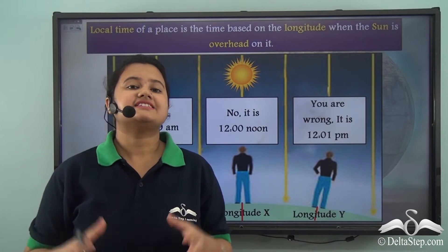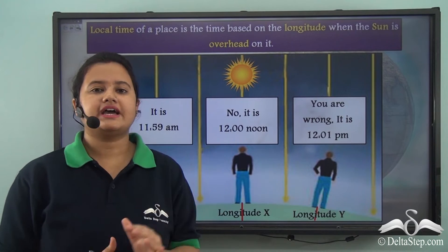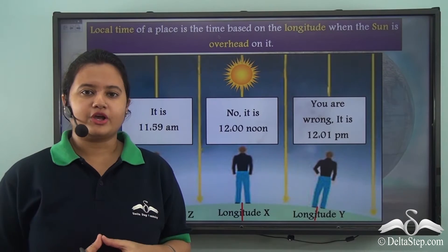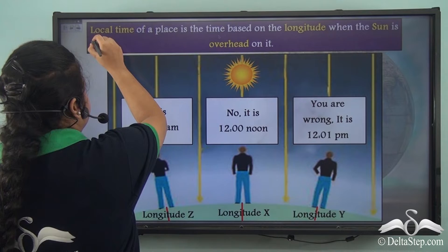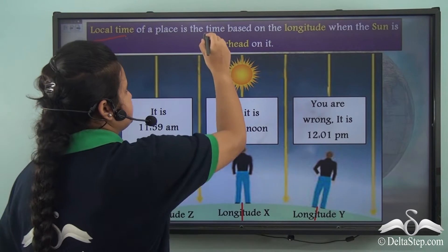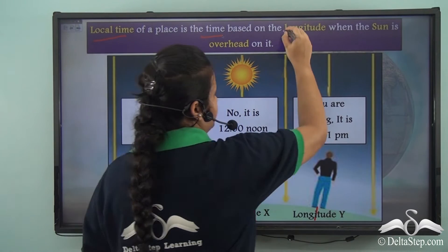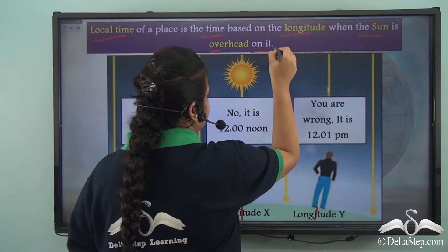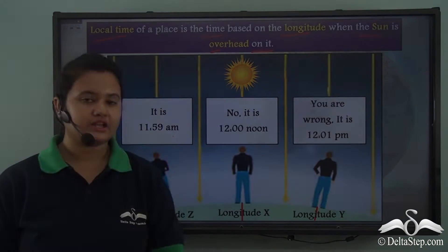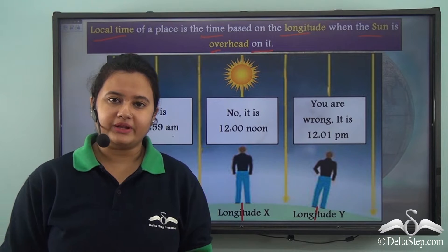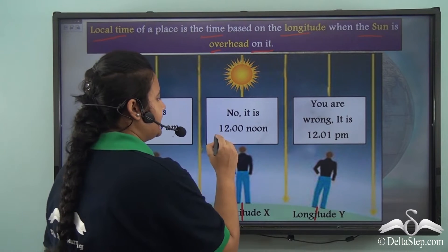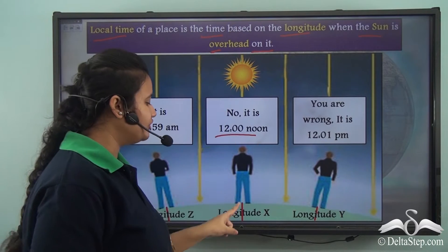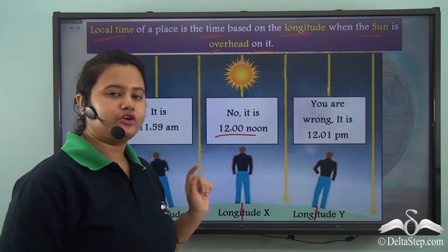Yes, there is a direct connection between the local time of a place and the position of the sun. The local time of a place is defined as the time based on the longitude when the sun is overhead on that particular longitude. The local time of a place is generally 12 noon — that is the time when the sun is overhead over that particular longitude.